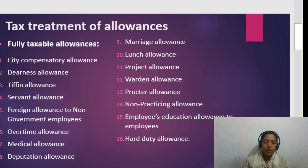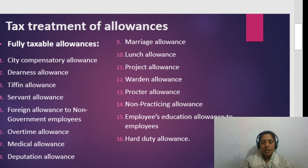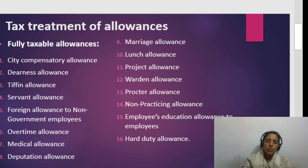Other fully taxable allowances include: medical allowance, deputation allowance, marriage allowance, lunch allowance, project allowance, warden allowance, proctor allowance, non-practicing allowance, education allowance to employees, and hard duty allowance. All these allowances are fully taxable.